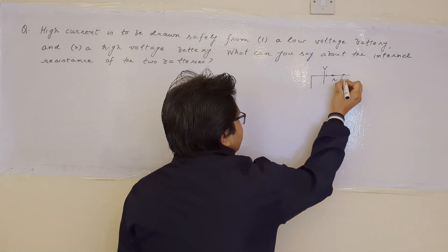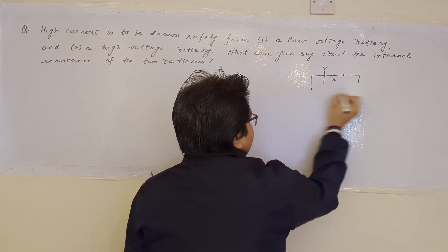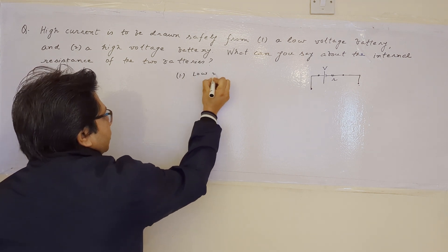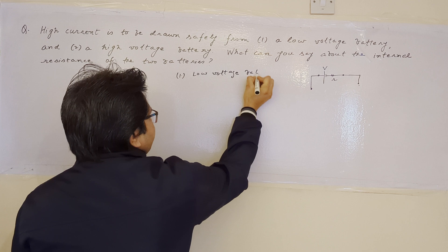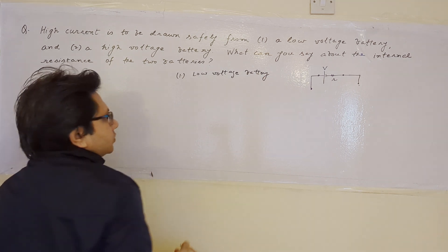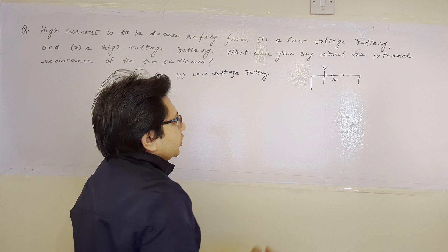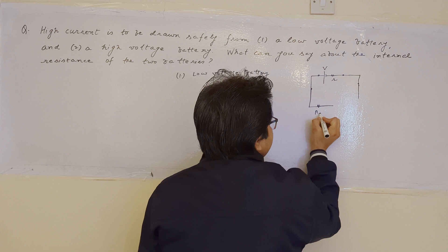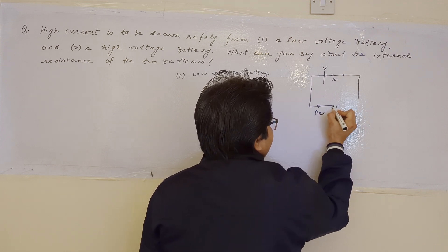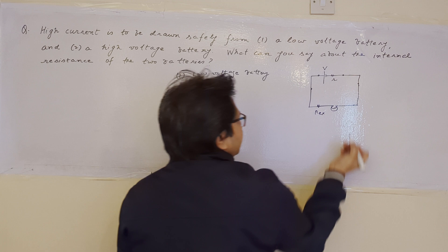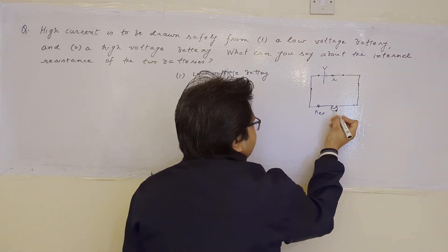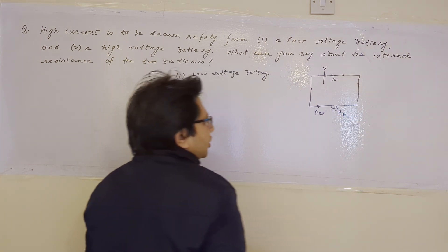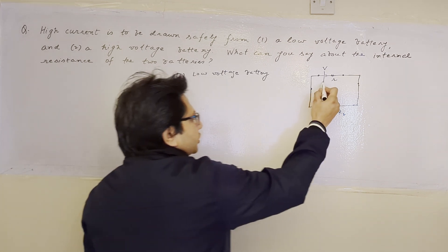The battery has a certain voltage plus its internal resistance. In Case 1, we have a low voltage battery and we have to draw a high amount of current from it. To draw the current we complete the circuit — for example, there is some external resistance and a load, such as a bulb. The bulb has resistance R_b, so we have external resistance plus bulb resistance in the circuit.